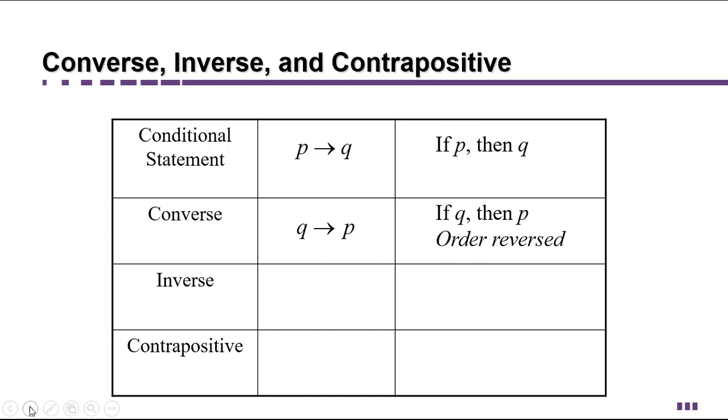The next one we're going to look at is called the inverse. The inverse happens when you negate each of the component statements in the original conditional statement. So instead of P implies Q, we have not P implies not Q. So the order has stayed the same,